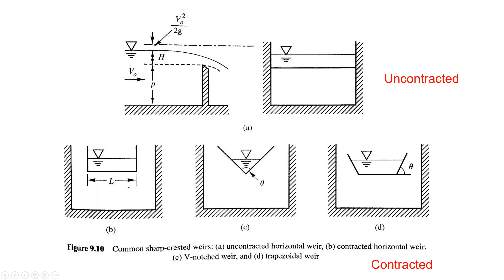There are lots of different weir shapes. Rectangle is the most standard. We've also got triangles and trapezoids, and all of these have different relationships between the depth of water and the flow rate passing through. The triangular weir, because of its steep edges, allows for a more sensitive measurement range — for a given increase in discharge, you get a proportionally larger increase in water depth compared to a rectangular weir.